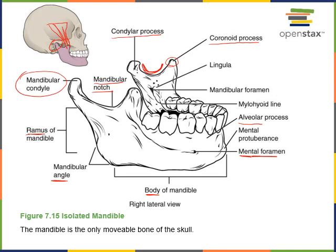There is also a mandibular foramen on the medial surface of the ramus. The mandibular foramen contains the mandibular branch of the trigeminal nerve, which carries sensory information from the lower jaw and also excites the muscles of mastication, like the temporalis.